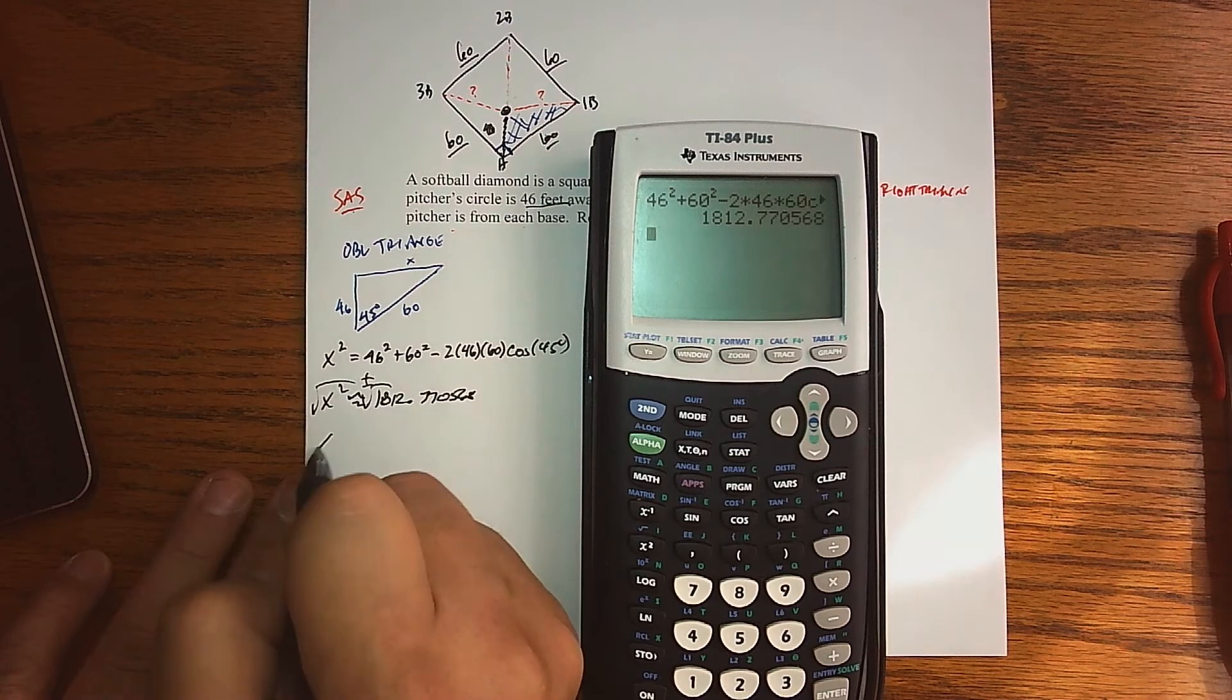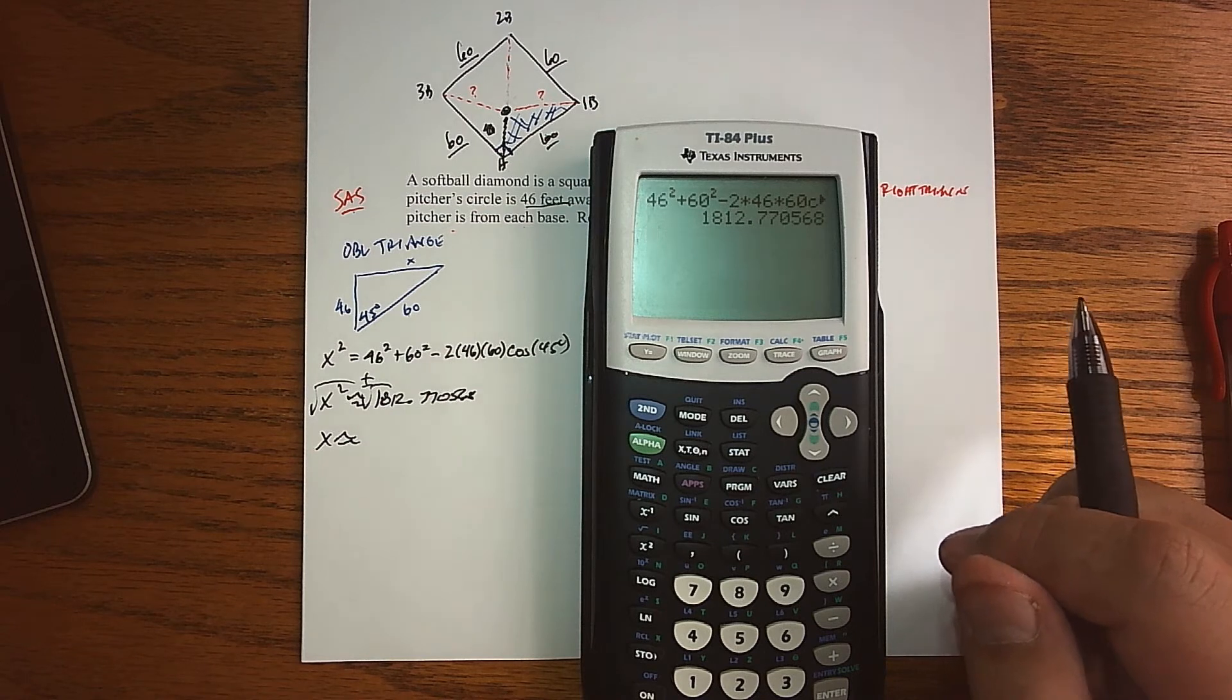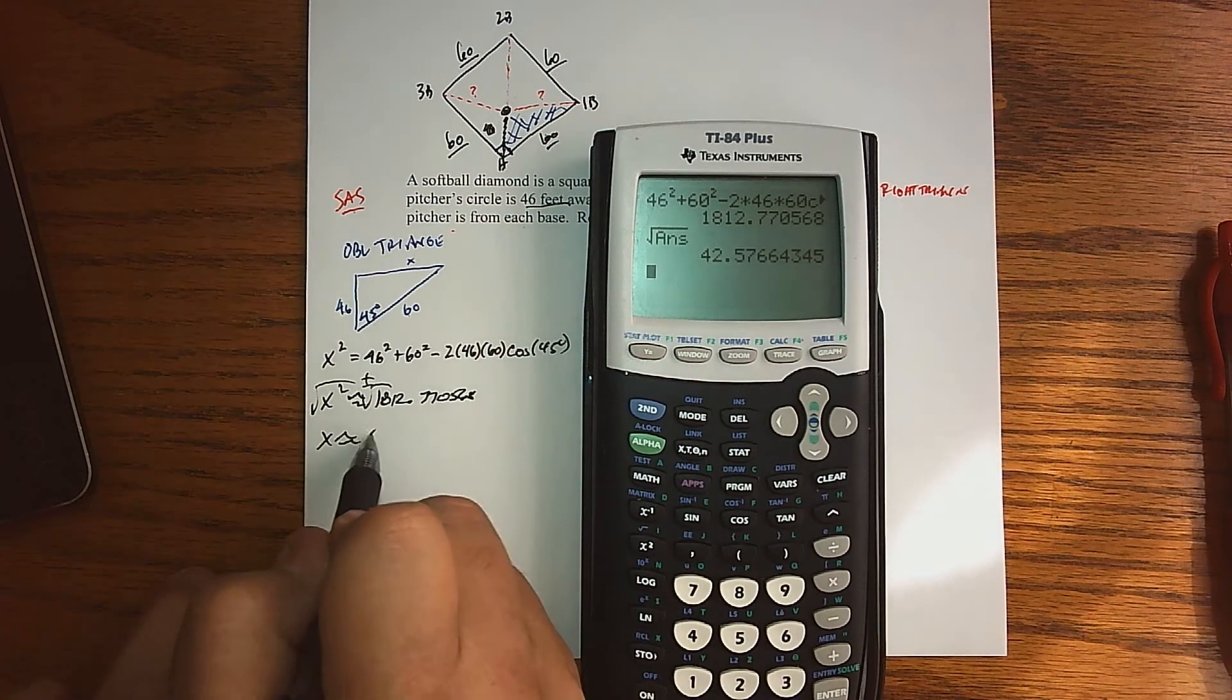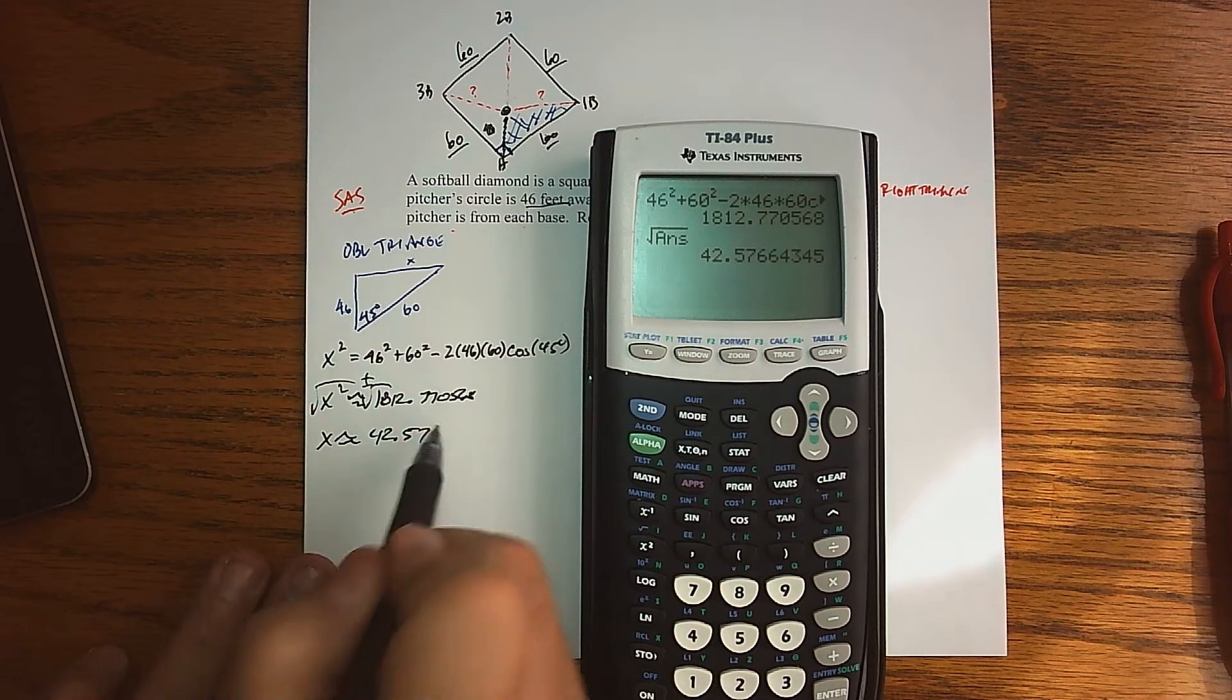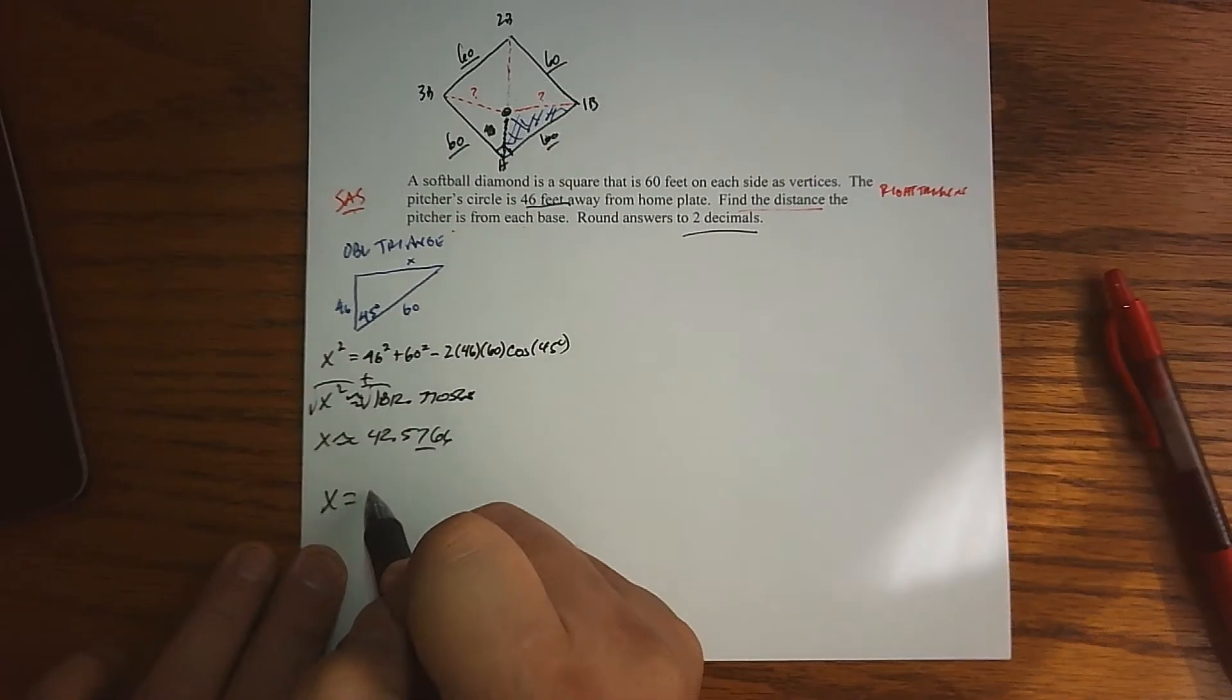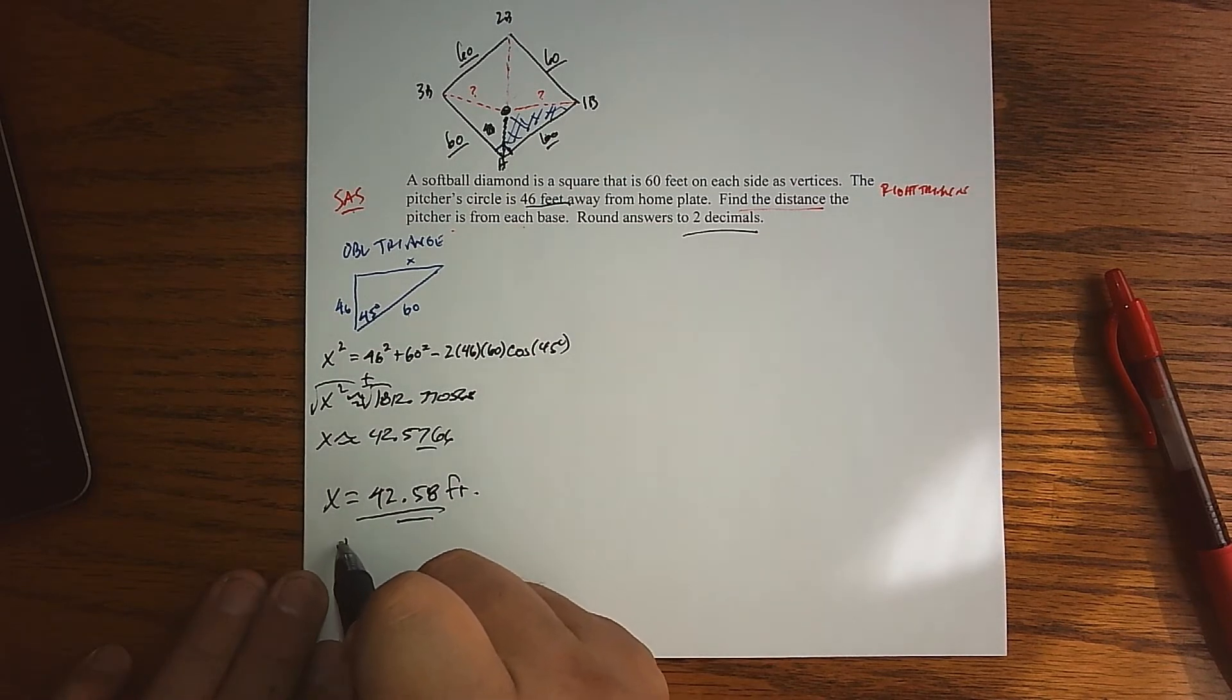What we get is 1812.770568. So taking a square root—technically speaking we have a plus minus, but we're not going to worry about the plus minus here because we're talking about a distance—taking the square root of that answer we end up getting 42.5766. I was only asking for a two-decimal answer, so x is 42.58 feet, and so that's the distance from first base.